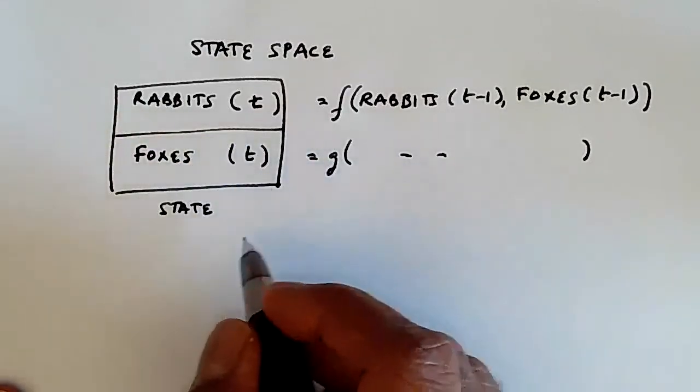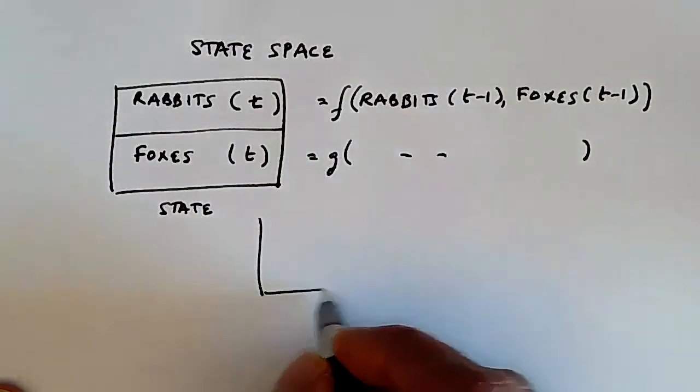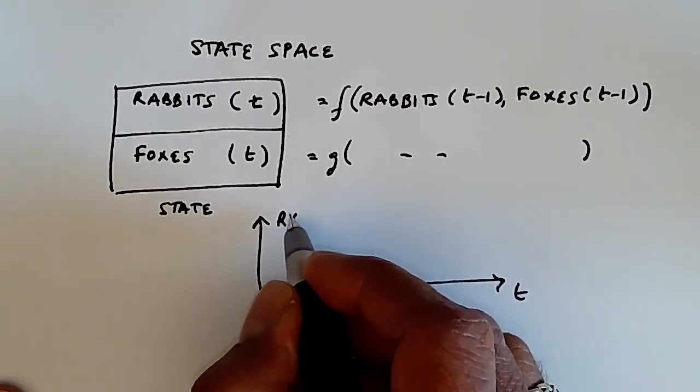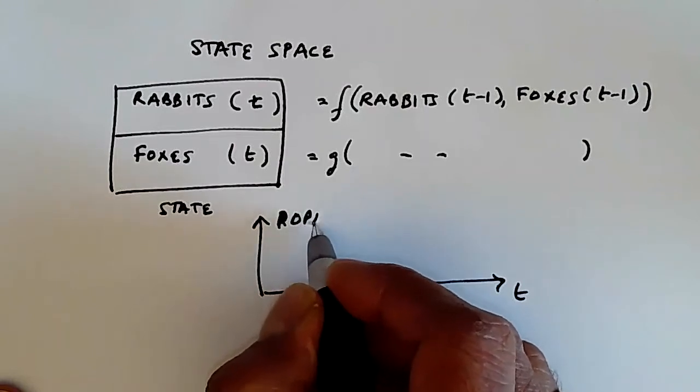Similarly for foxes, if we wanted to plot the dynamic evolution of rabbits over time, then what we would do would be over here, which would be the population size.